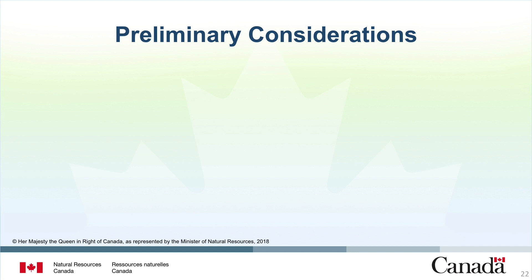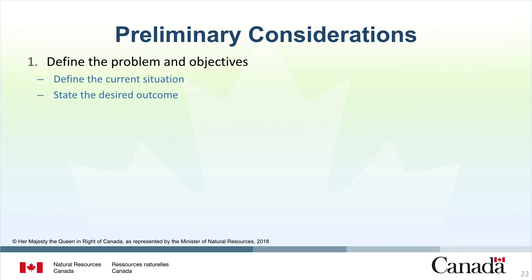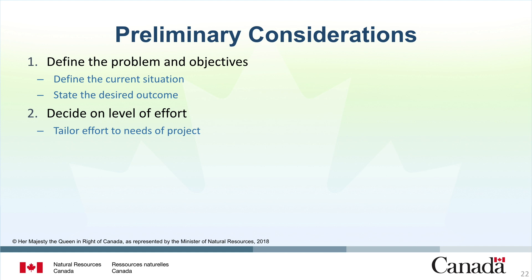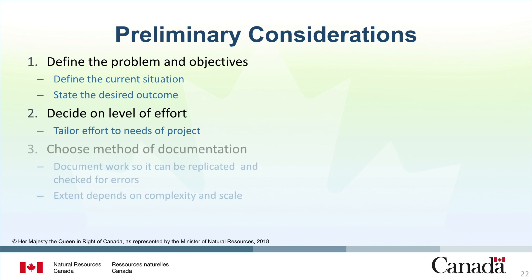The first step in the lifecycle costing process is to identify the problem and project objectives. Are you dealing with a poor performing piece of equipment that needs replacement? Do you have a given level of funding that you need to use optimally? Make sure from the outset that you define the current situation and state the desired outcome. Next, think about level of effort. Depending on the project scope, lifecycle costing can be very time consuming and detail oriented, or it can be used for very simple and quick calculations. The level of effort should be tailored to the needs of the project. Lifecycle costing studies need to be carefully documented so work can be replicated and checked for errors. The extent of documentation should reflect the complexity and scale of the project.